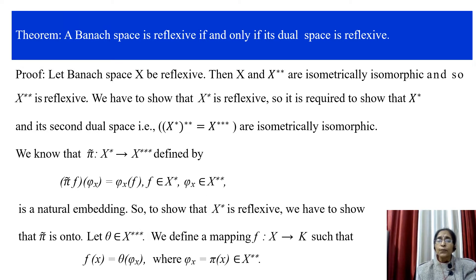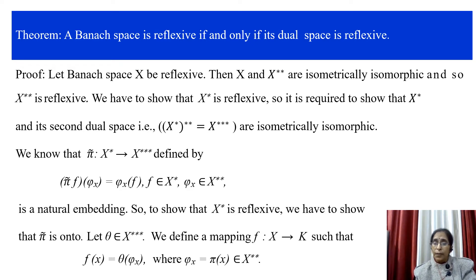Let us prove this theorem. Let Banach space X be reflexive. Then we know that X is isometrically isomorphic to its second dual space X**. We have proved that if any two normed linear spaces are isometrically isomorphic and one of them is reflexive, then the other one is also reflexive. And so, X** is reflexive.